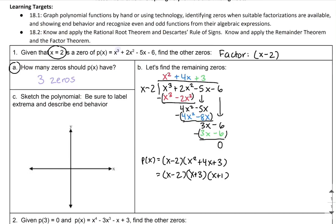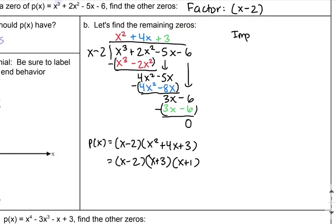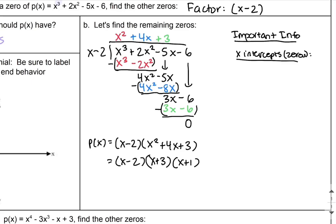I can rewrite p of x as (x minus 2)(x squared plus 4x plus 3). Then I can factor x squared plus 4x plus 3 further as (x+3)(x+1), giving me the fully factored form: (x minus 2)(x plus 3)(x plus 1). I can see I have three zeros there: x=2, x=-3, and x=-1.